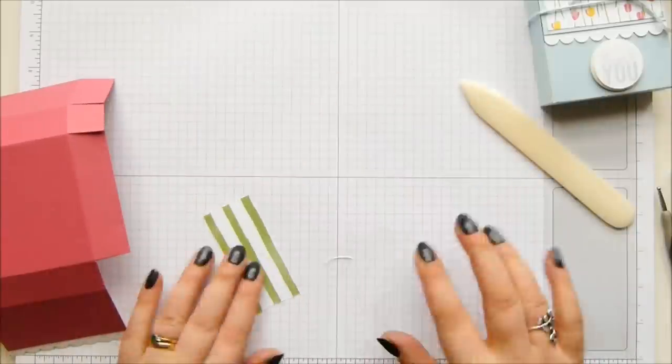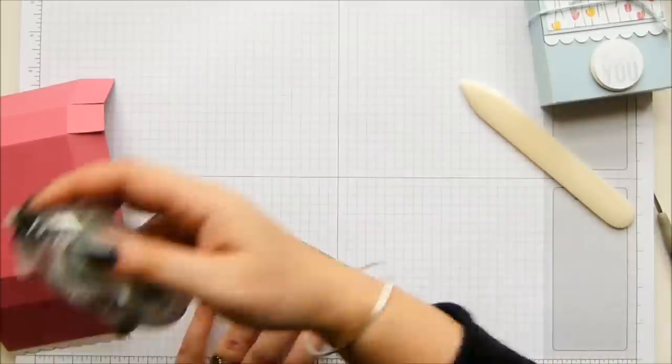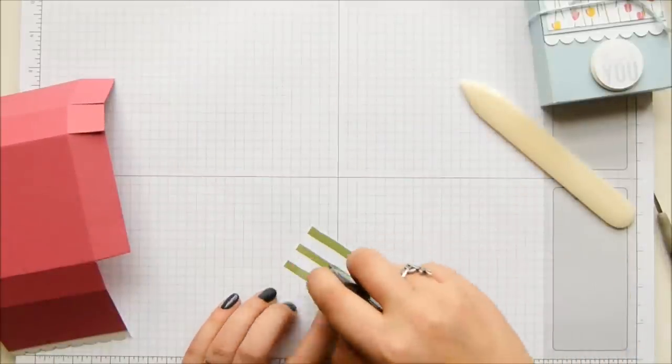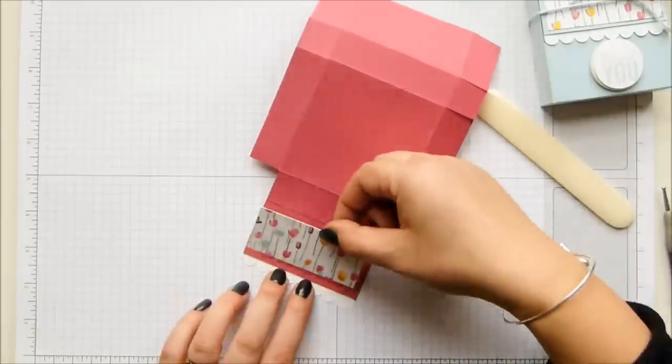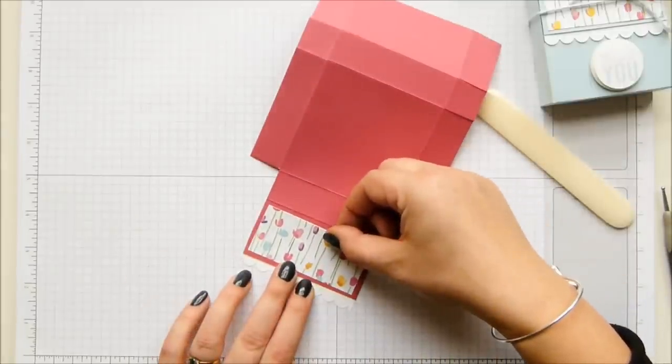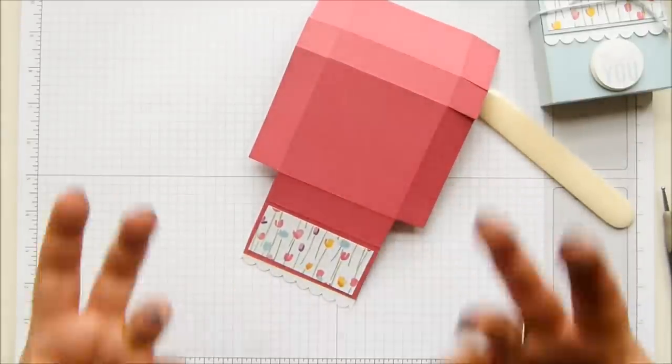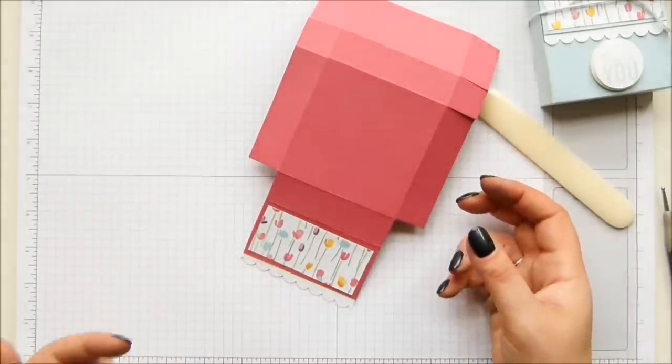Okay, and then my little DSP panel going to go over the top. This is rose red cardstock. That was soft sky in my original one. And it's the same pattern. I deliberately chose the same pattern so that you can see that you can get one pattern, two different looks when you just change the cardstock.